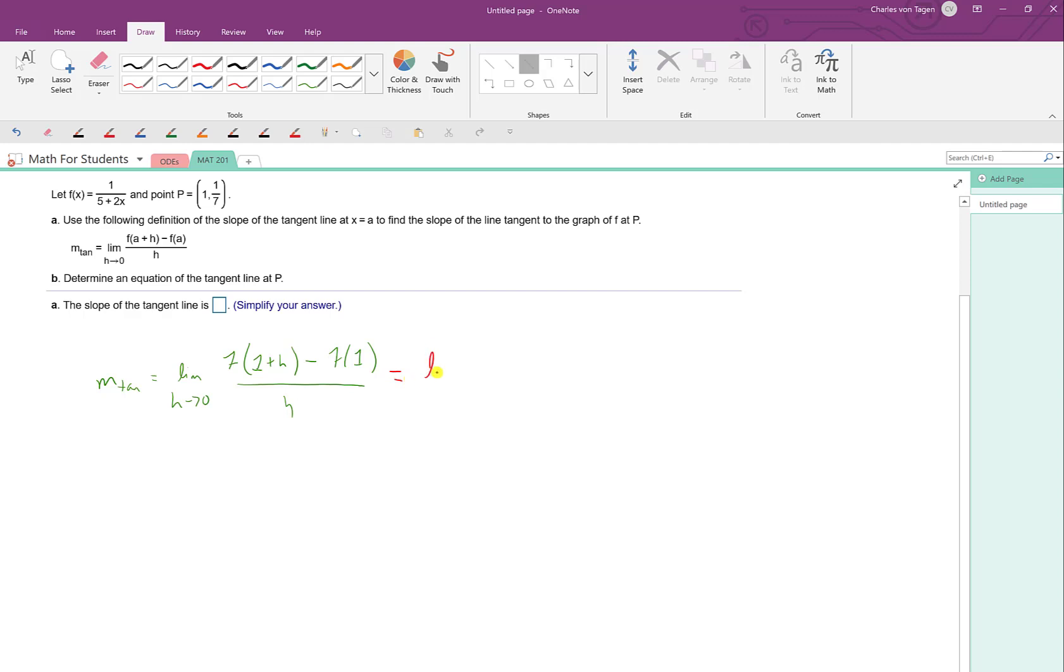So this is equal to the limit as h approaches 0 of f of 1 plus h. Well, that would be 1 over 5 plus 2 times 1 plus h minus f of 1. Well, that would be 1 over 5 plus 2 times 1 all over h. So what do we got? Well, we've got a mess here. We need to clean it up. Our goal is to be able to use the direct substitution property for limits, and for that to happen, we'll have to cancel out this factor of h right here.